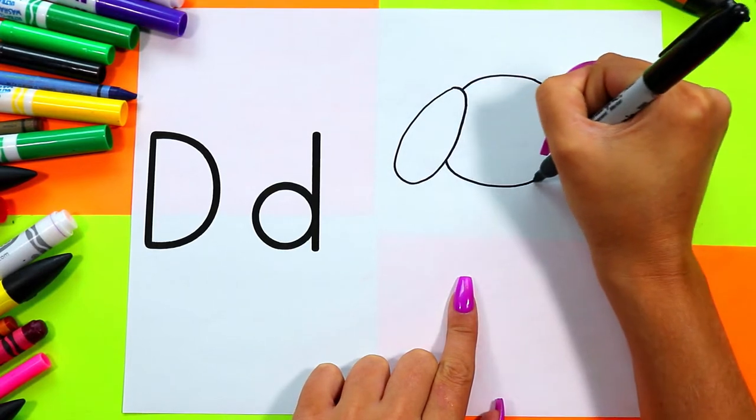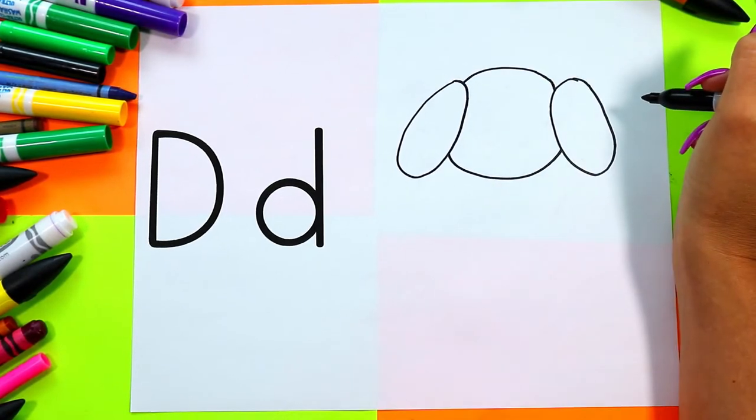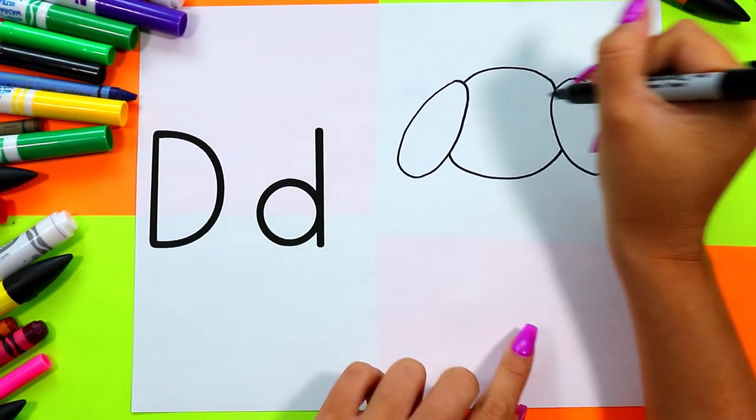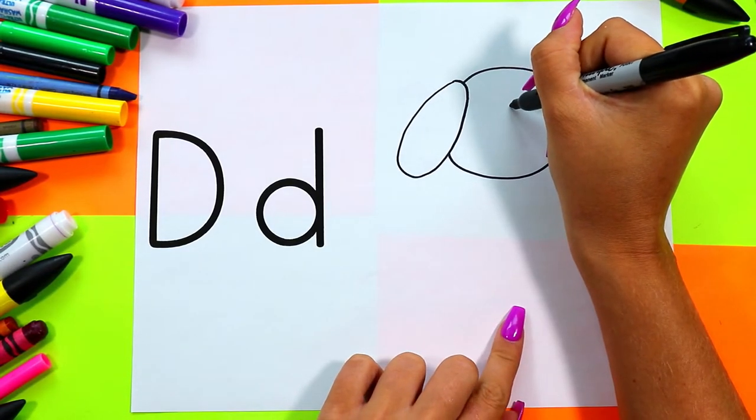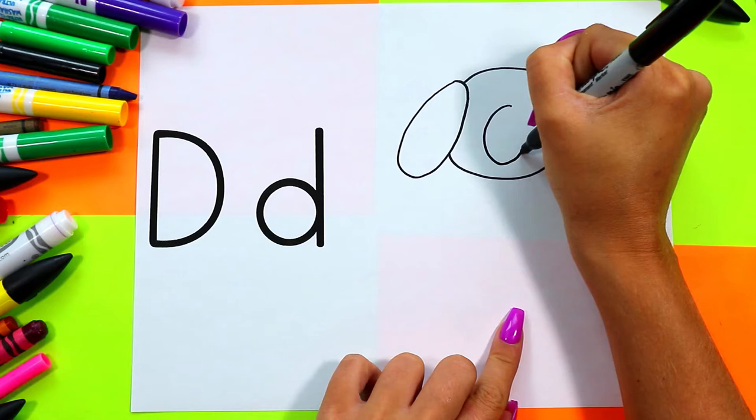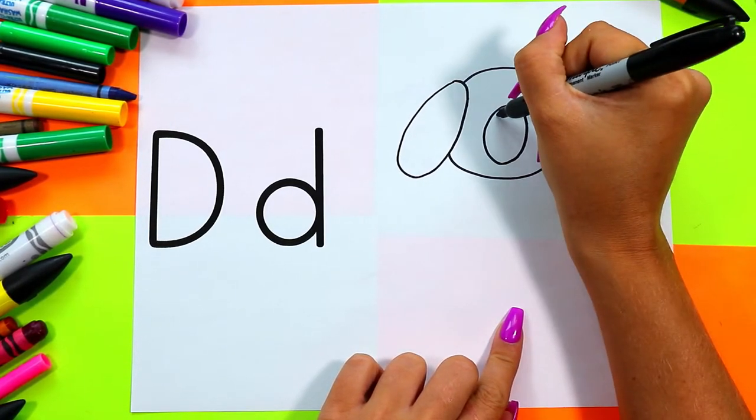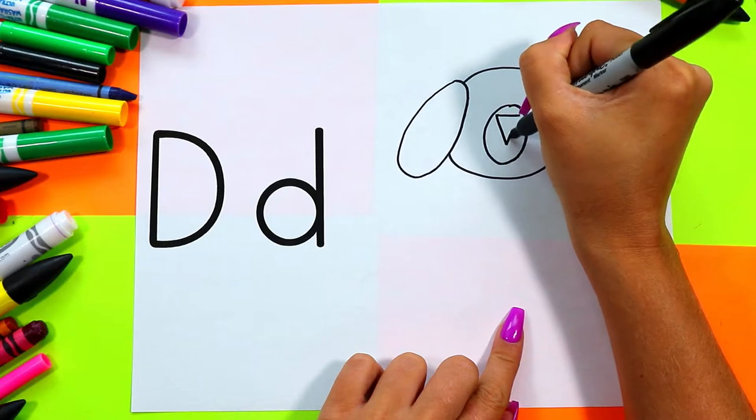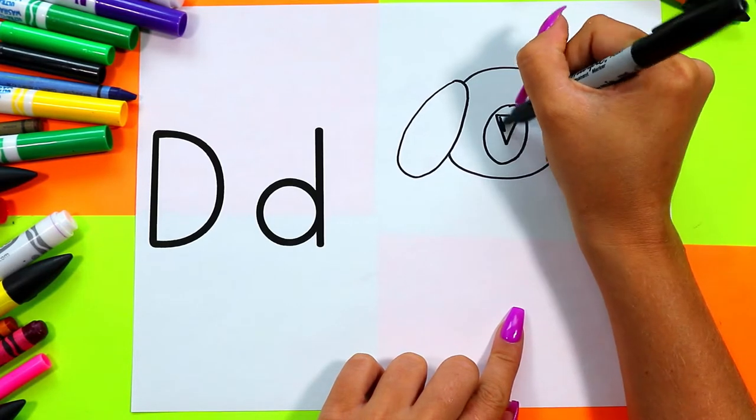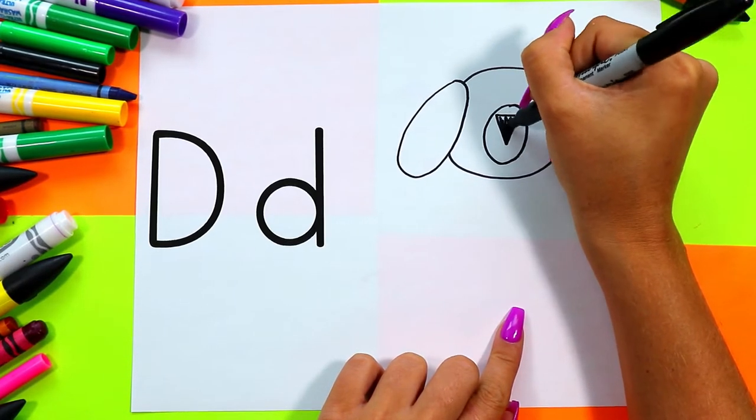Draw a circle on dog's face for the snout, and draw an upside down triangle for dog's nose and color it in.